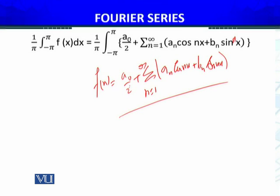If I want to determine a_naught, I am going to integrate both sides from minus pi to pi. My function is a 2π periodic function. I will integrate it and multiply by 1 over π on both sides.